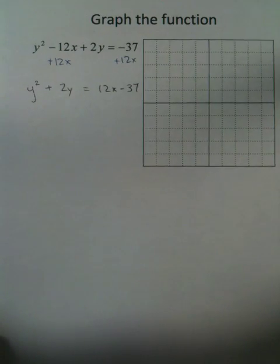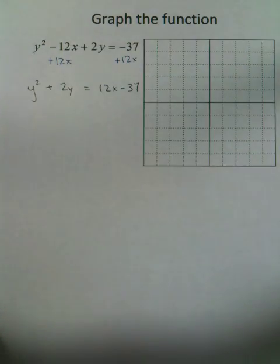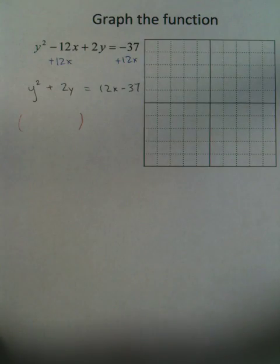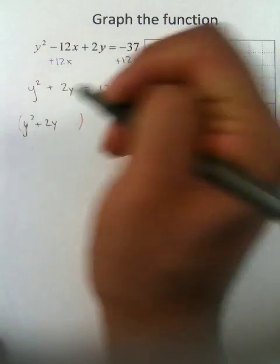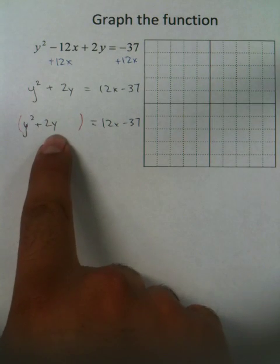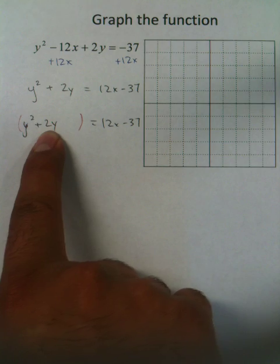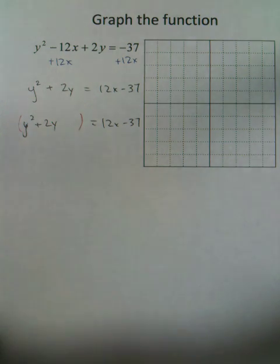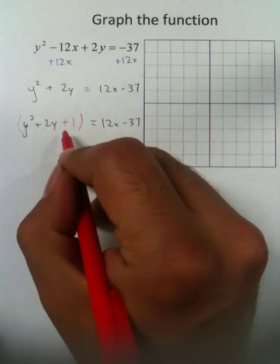Now, the completing the square process, basically since Y is by itself, we're going to be finding some number to add to this side so that it's a perfect square trinomial. Y squared plus 2Y. This portion needs to be cut in half, so we make it 1. We square it, and the square of 1 is 1. So that means we're going to be adding 1 to this quantity, hence why it's called completing the square.